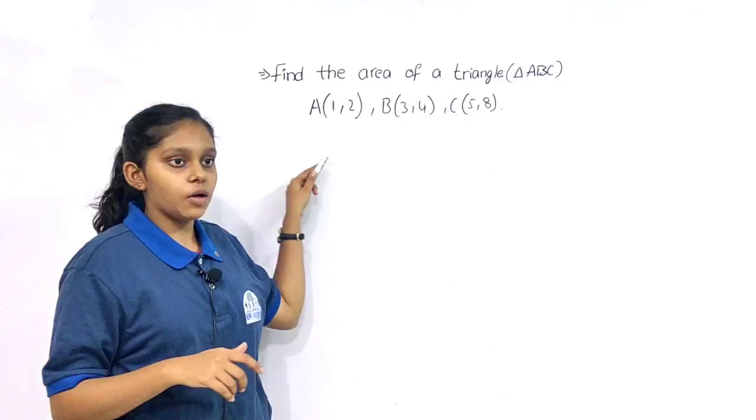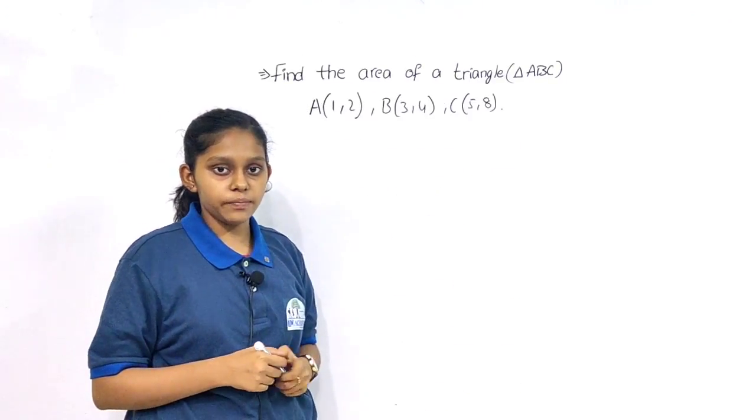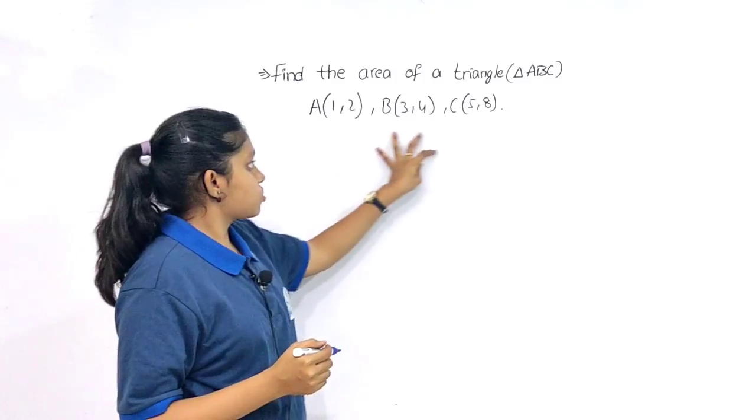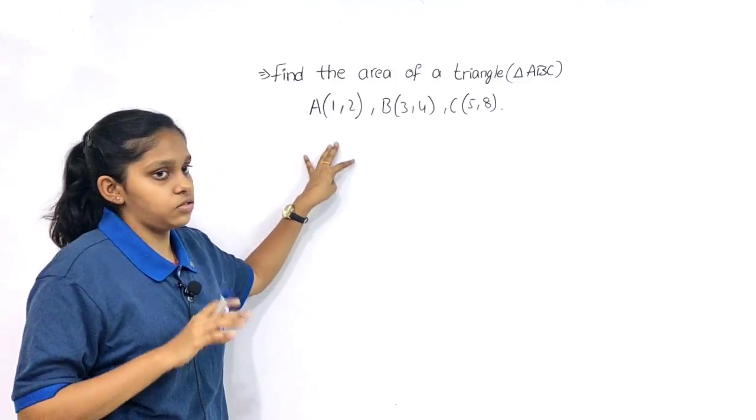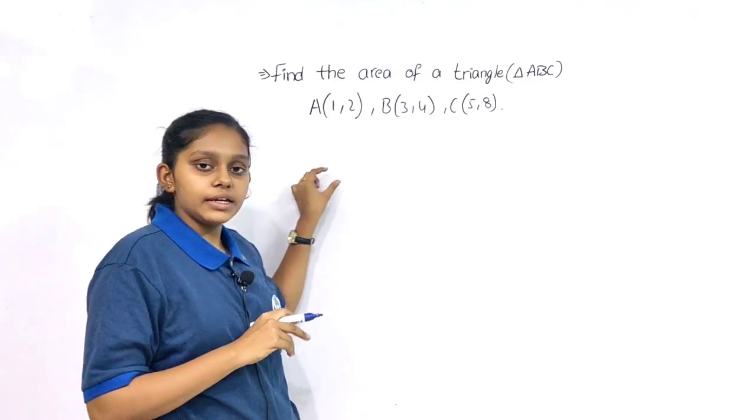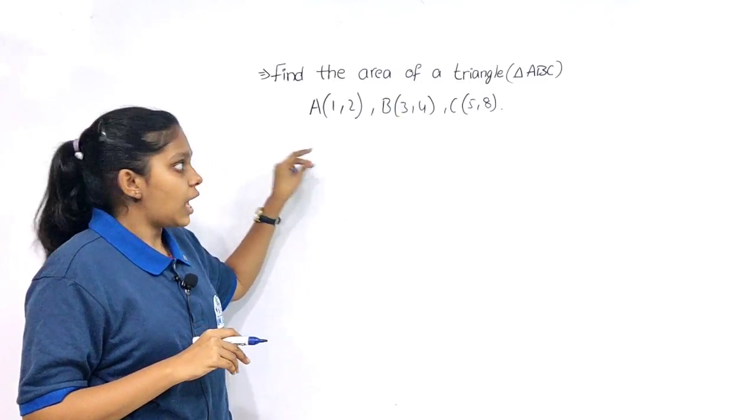Now I am going to do the tricky process. To make a short way, we have to take one ordered pair and make it as 0. How to make it as 0?